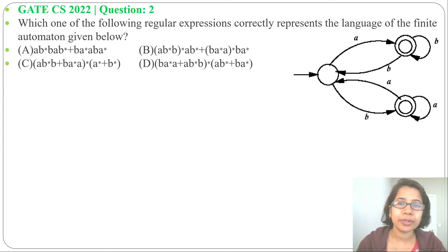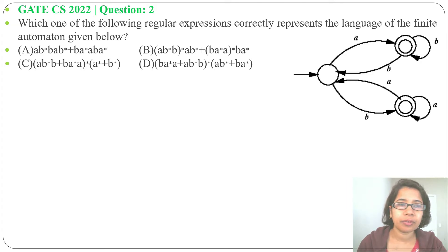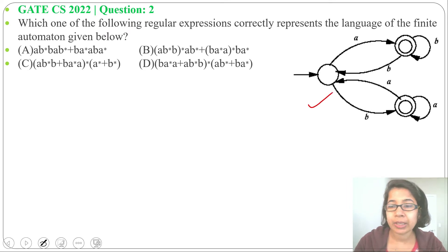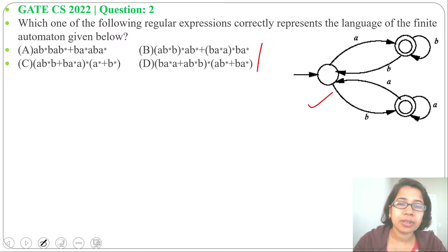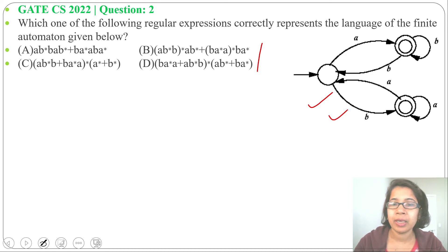Hi, let's solve one previous question of regular language TOC. This question was asked in GATE CS 2022, question number 2: which of the following regular expressions correctly represents the language of the finite automata given below? This is the NFA and four regular expressions are given, asking which regular expression is correct for this NFA. You can solve this question in different ways.